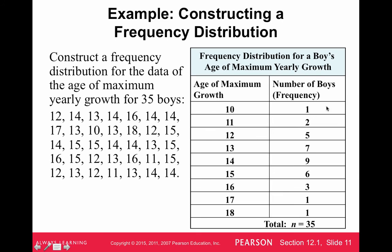Frequency just means a count. For example, there is one age-10 entry. You go through the list and count: how many 11s — there are two. How many 12s — there are five. You go through the entire list and write the frequency distribution that way.